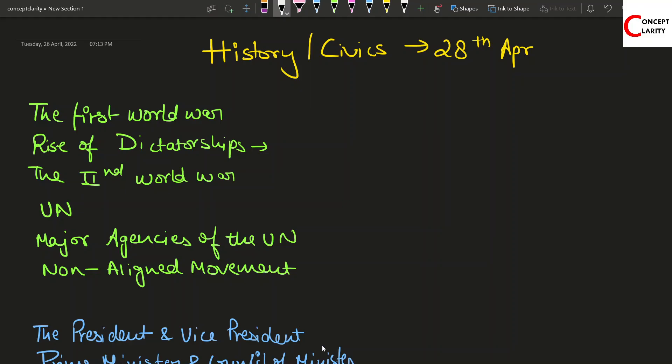Hi all, welcome back. In this video we will discuss how you can prepare your history civics schedule to get maximum marks in your board exam. History civics exam will be held on 28th of April, so we have to plan accordingly. Today is 26th, so we only have 26th evening or night and then 27th entire day.